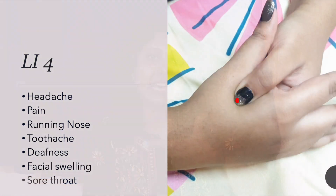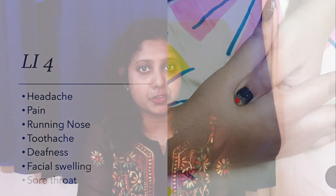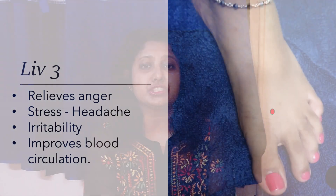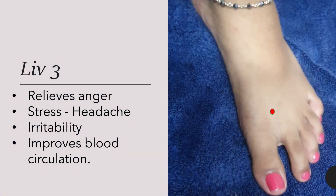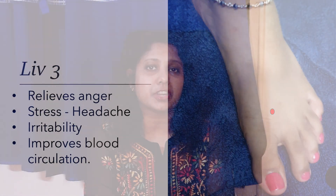They are called the LI-4 point and the LV-3 point. The LI-4 point is located between your thumb and your index finger at the highest bump. The LV-3 point is located between the first and the second toe, about an inch away from the web of your toes.